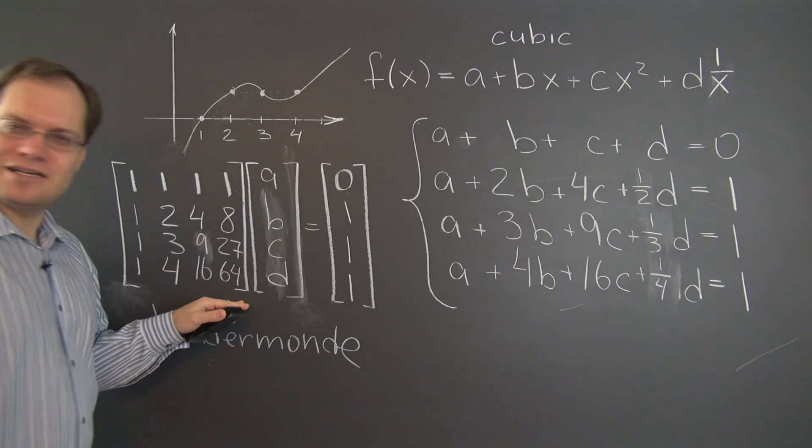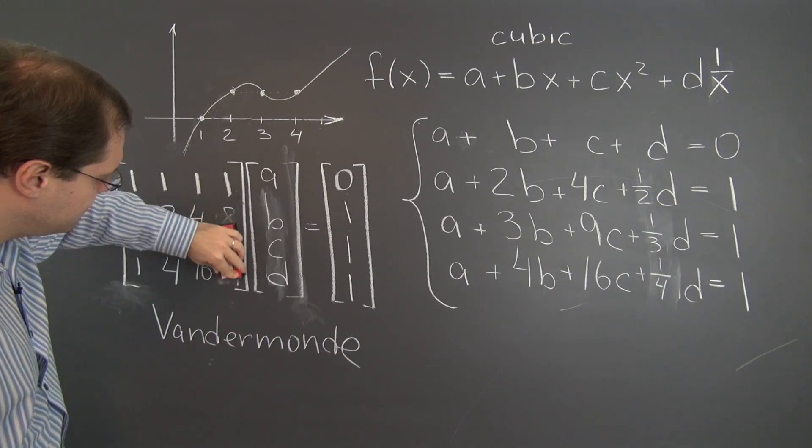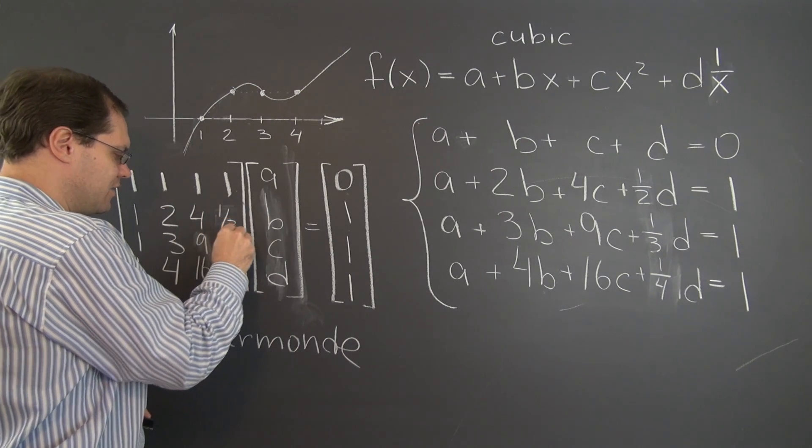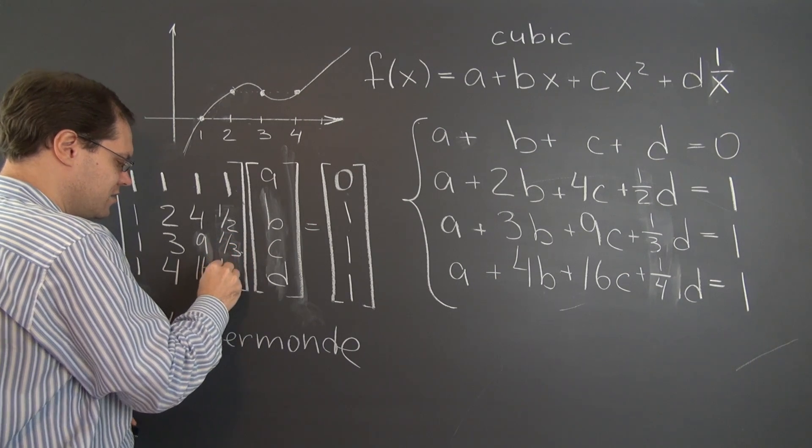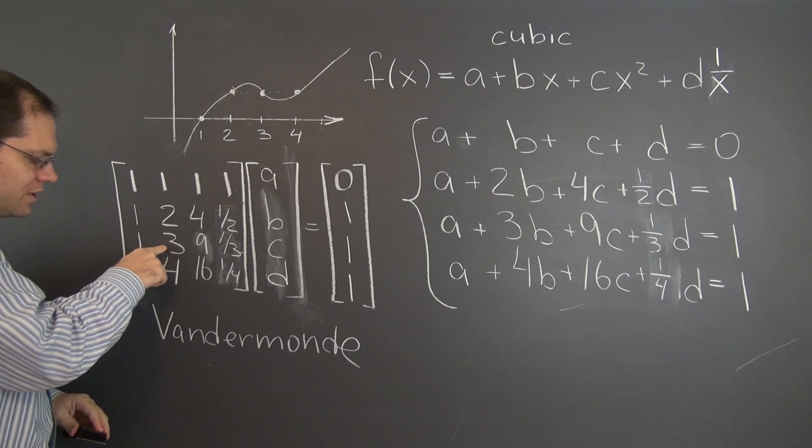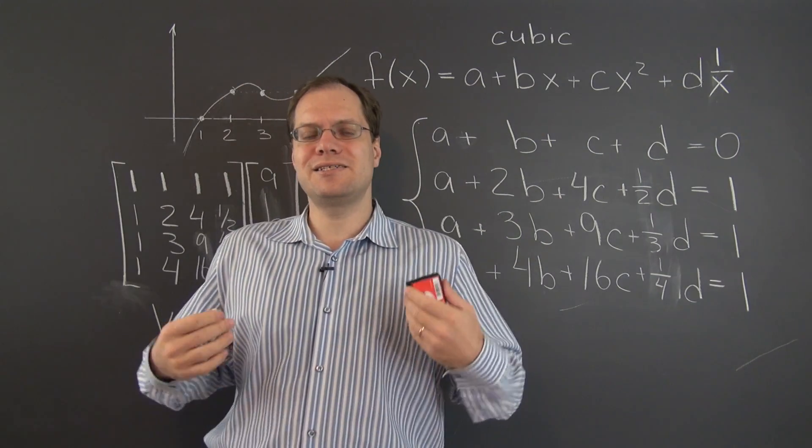The difference in the entries of the matrix is only in the last column, and it's these three numbers. Instead of 8, 27, and 64, we'll now have 1 half, 1 third, and 1 quarter, which is 1 over x equals 2, 1 over 3, and 1 over 4. And the rest is exactly the same.